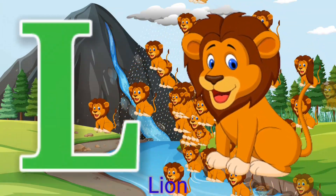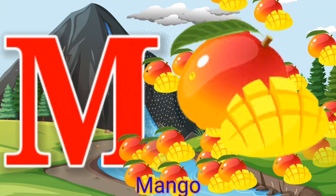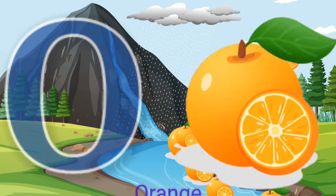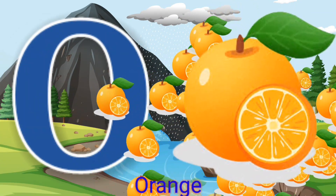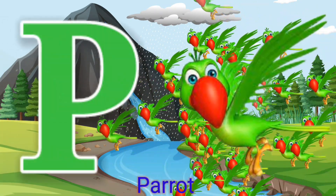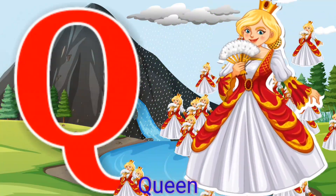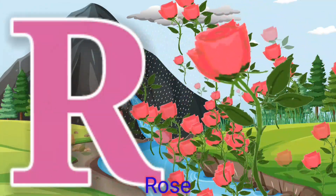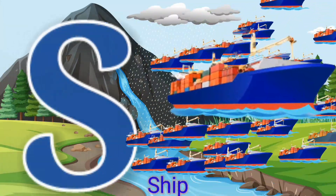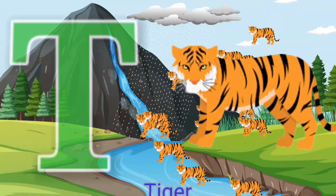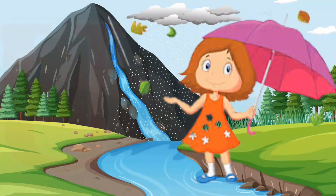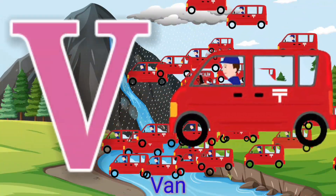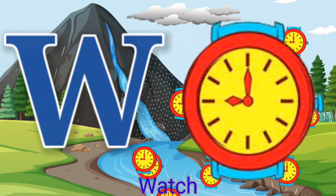L for Lion, M for Mango, N for Nest, O for Orange, P for Parrot, Q for Queen, R for Rose, S for Sheep, T for Tiger, U for Umbrella, B for Ben, B for Ben, W for Watch.